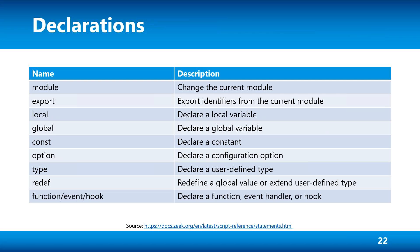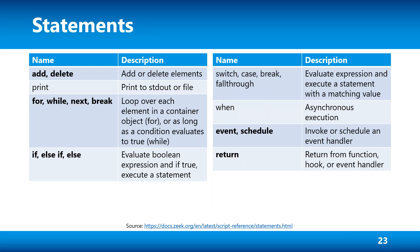Declarations are kind of self-explanatory. If you want to define a constant, use the const declaration; if you want to define a variable or function as global, use the global declaration. Statements work pretty much the same as in other languages — we can define loops, conditional statements with if/else, and this scripting language also has a switch statement with break and fall through support. We can return with a value in a function or invoke an event handler.